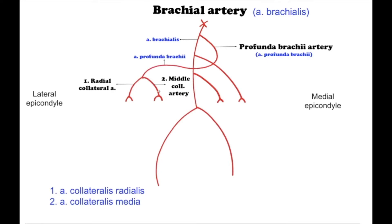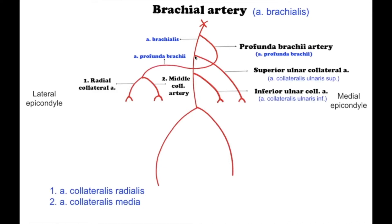The deep brachial artery also gives off a posterior descending branch, which is the middle collateral artery, arteria collateralis media, which anastomoses with the interosseous recurrent artery, arteria interossea recurrens, from the posterior interosseous artery.